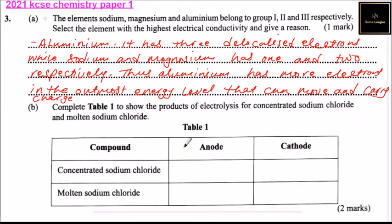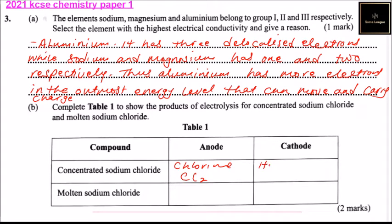For concentrated sodium chloride, chlorine will be produced at the anode, which you can also write as Cl₂. At the cathode, hydrogen will be produced, or H₂.